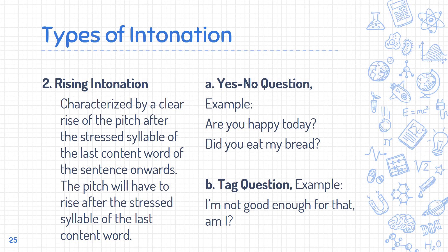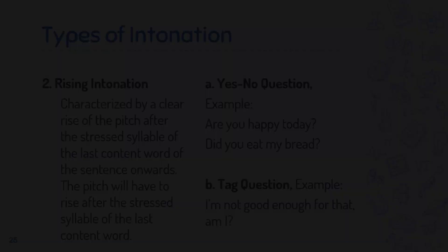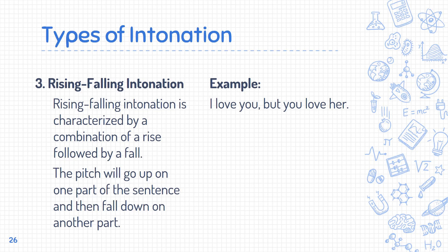Second, rising intonation is used in yes/no questions — 'Are you happy today?' 'Did you eat my bread?' — and in tag questions — 'I'm not good enough for that, am I?' Third, rising-falling intonation — for example, 'I love you, but you love her.'